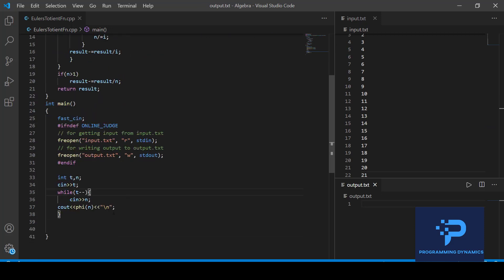So we have taken the test cases and for each test case we will be providing an input n and for each n we will be outputting the phi of n value. So I have taken in the input file 21 test cases and numbers ranging from 1 to 21.